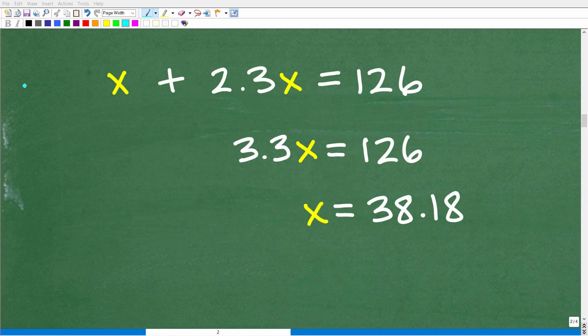Alright, so let's get into the steps to solve this basic linear equation. So we have x plus 2.3x is equal to 126. So these two right here are what we call like terms. So in front of this x is actually a 1. So 1 plus 2.3 is 3.3x.